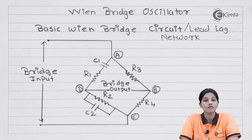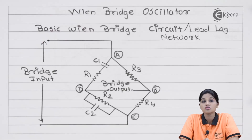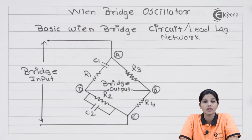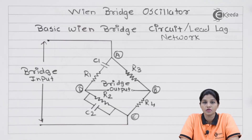In the case of a Wien bridge oscillator, the phase shift introduced by the feedback network is zero degrees, because the amplifier used is a non-inverting amplifier, which does not introduce any phase shift to the signal. Therefore, there is no need for additional phase shift introduced by the feedback network. That is the major difference between the RC phase shift oscillator and the Wien bridge oscillator.